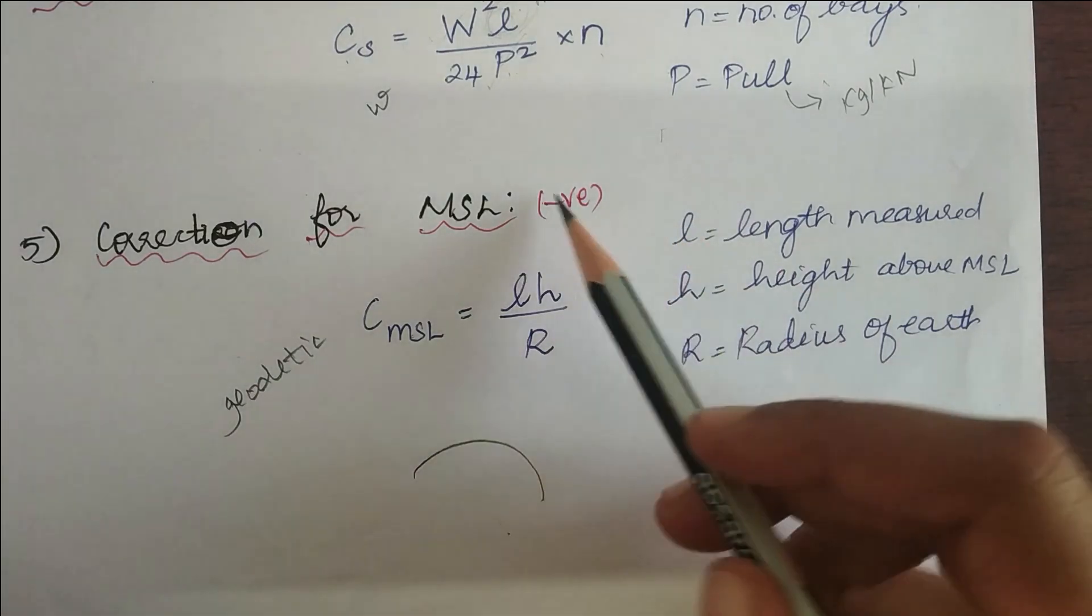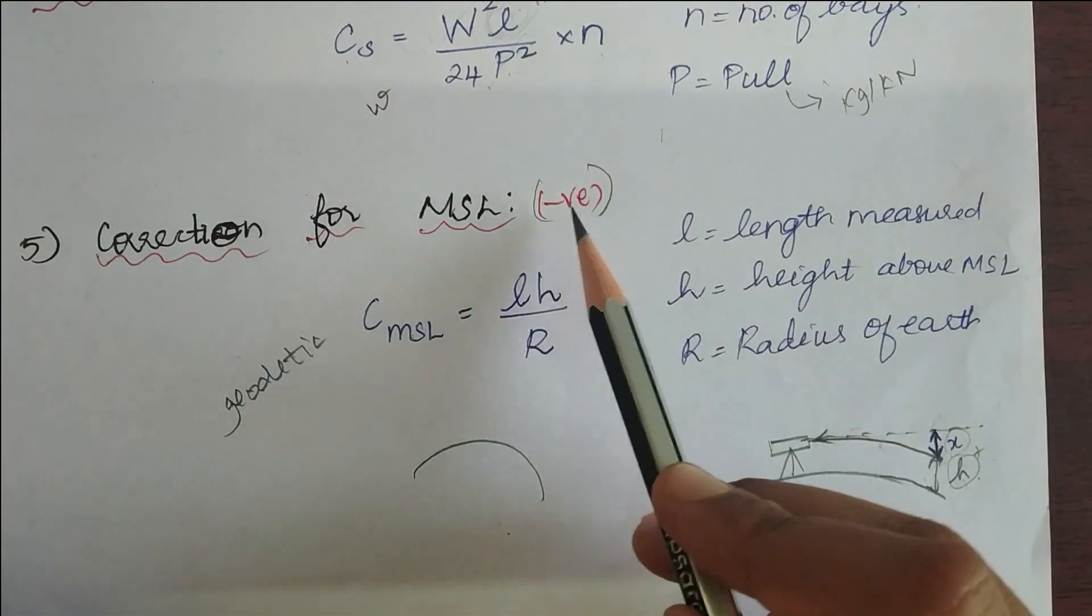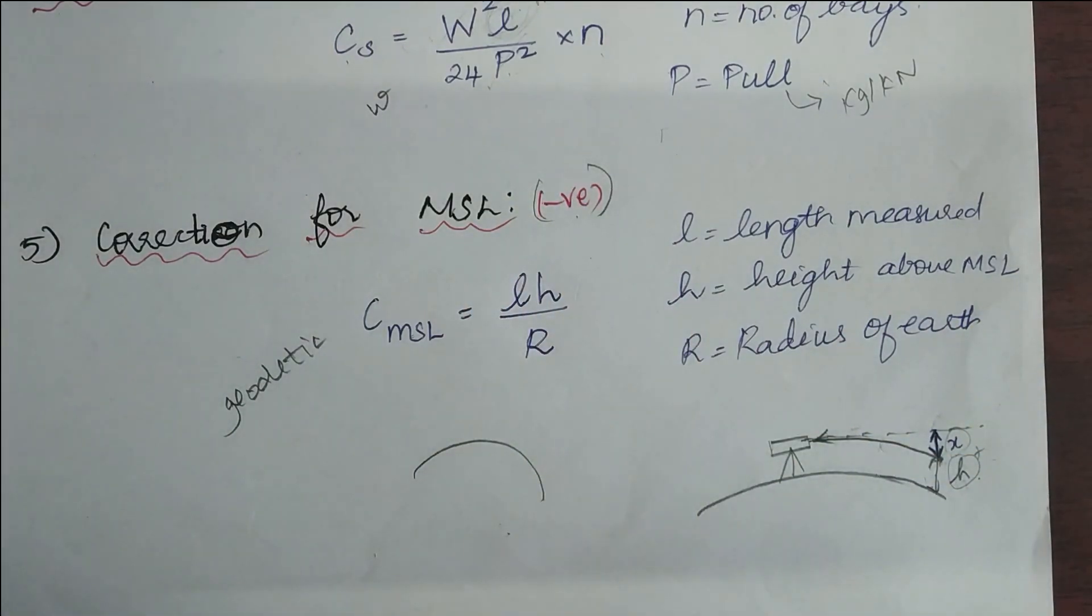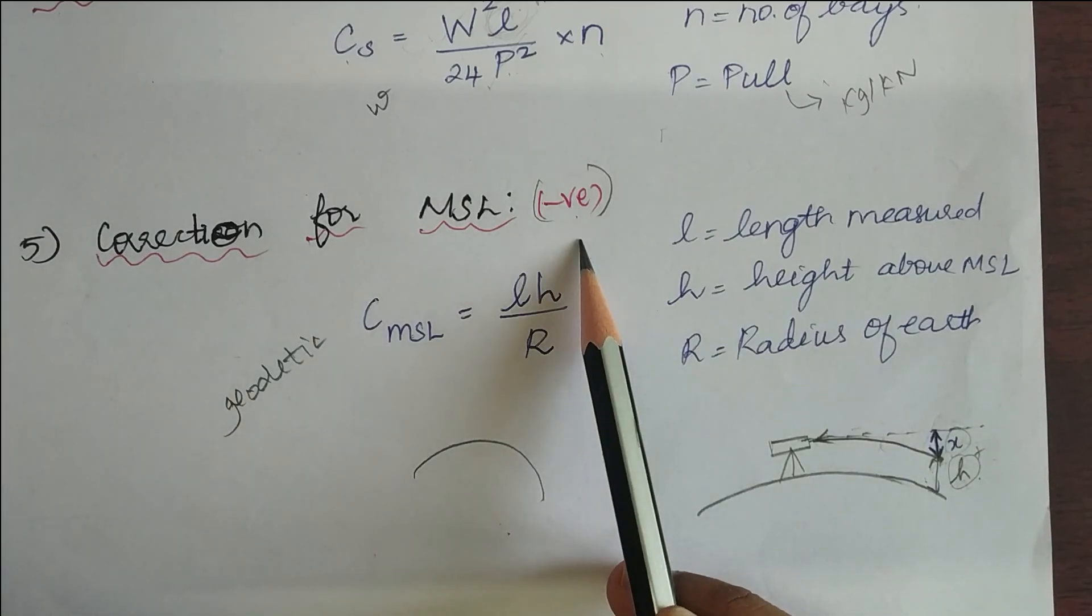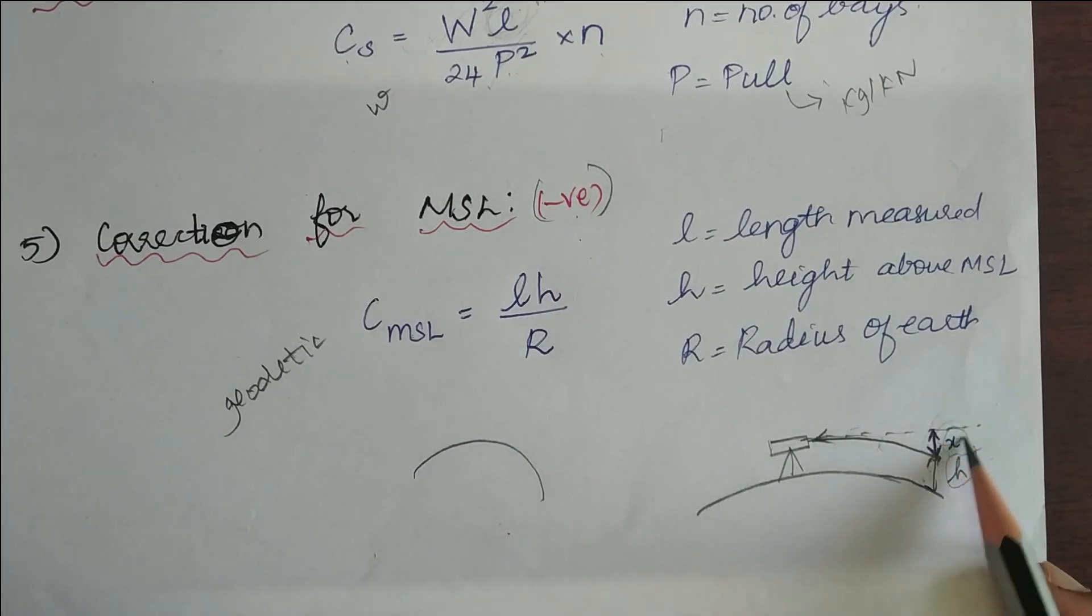So we have to see the correction is negative. So practically, we can understand that only when we deduct the value of x from our total value, we will get the original value. So that is why the correction is negative.